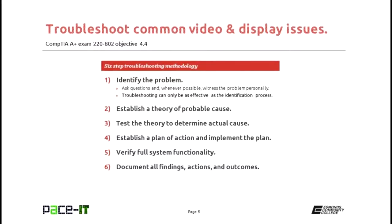The first step is to identify the problem. After you've identified the problem, you can establish a theory of probable cause. Once you've established a theory of probable cause, you need to test the theory to determine if it's the actual cause. If the test confirms your probable cause is the actual cause, then you need to establish a plan of action to resolve the problem and implement the plan. After you've done that, you need to verify full system functionality — don't just check to see if the original problem has been fixed, because sometimes a fix can introduce a new problem into the system.